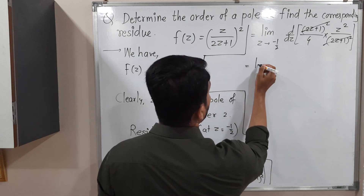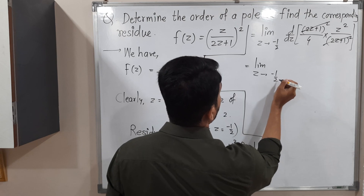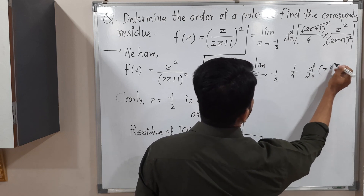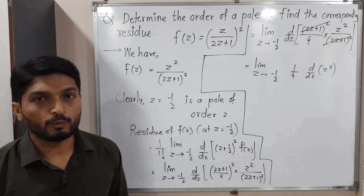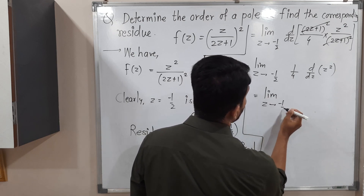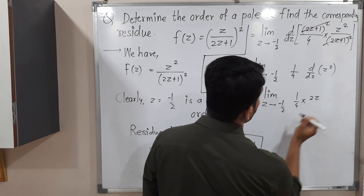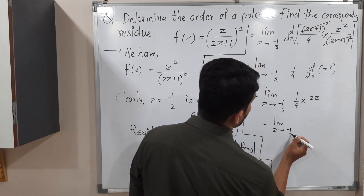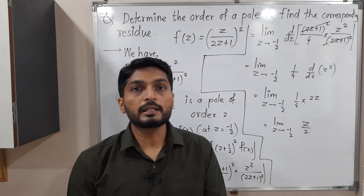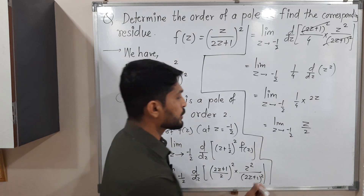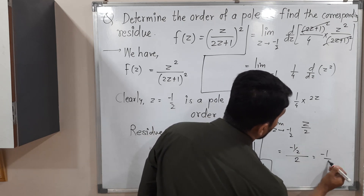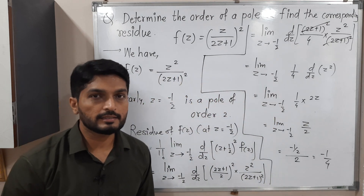So what remains is the limit as z tends to −1/2 of z²/4. Since 1/4 is a constant, we take it outside: (1/4) times the derivative of z², which is 2z. So this equals the limit as z tends to −1/2 of (1/4)(2z), and the 2 cancels to give z/2. Applying the limit by substituting z = −1/2: we get (−1/2)/2 = −1/4. So the required residue is −1/4.